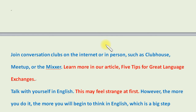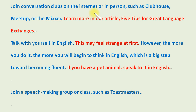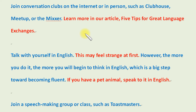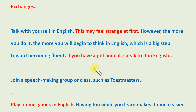Here are some ideas for speaking. Join conversation clubs on the internet or in person, such as Clubhouse, Meetup, or The Mixer. Learn more in our article, '5 Tips for Great Language Exchanges.' Talk with yourself in English — this may feel strange at first. However, the more you do it, the more you will begin to think in English, which is a big step toward becoming fluent. If you have a pet animal, speak to it in English. Join a speech-making group or class, such as Toastmasters.